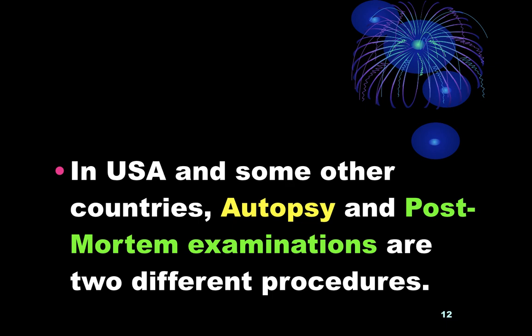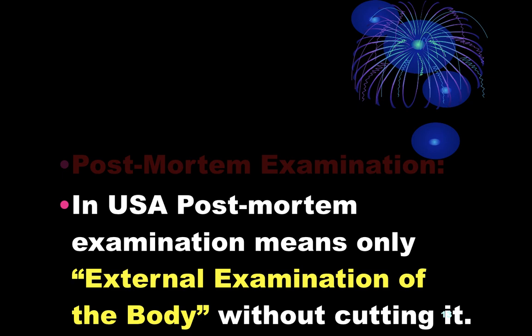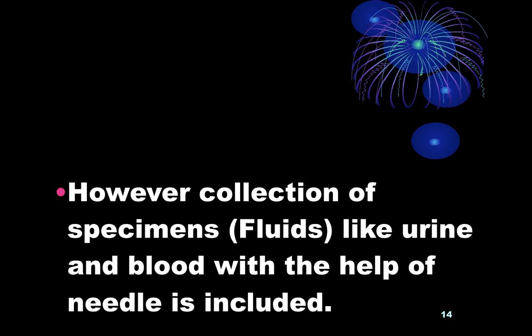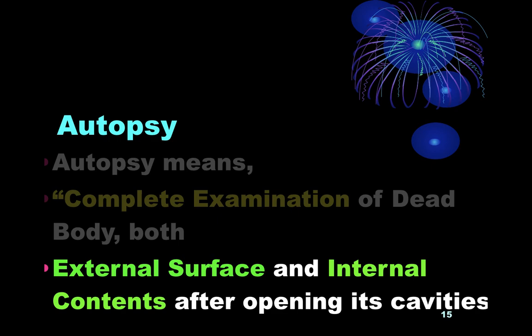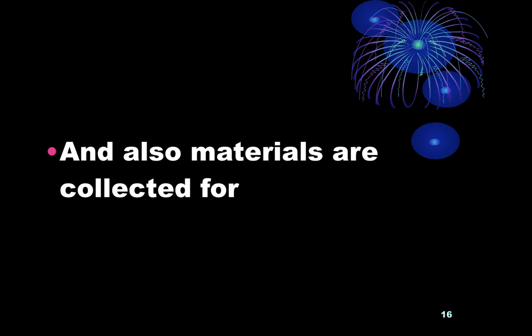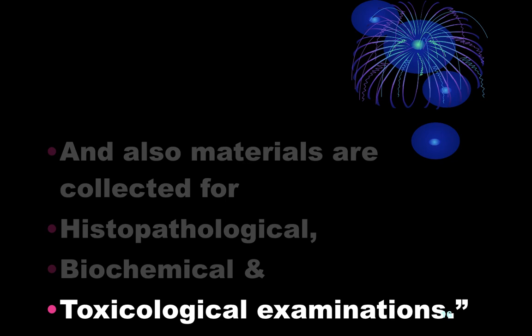In the USA and some other countries, autopsy and post-mortem examination are two different procedures. Post-mortem examination in the USA means only external examination of the body without cutting it; however, collection of specimens like fluids, urine, and blood with the help of a needle are included. Whereas autopsy means complete examination of the dead body — both external surface and internal contents after opening its cavities — along with collection of materials for histopathological and biochemical examinations.